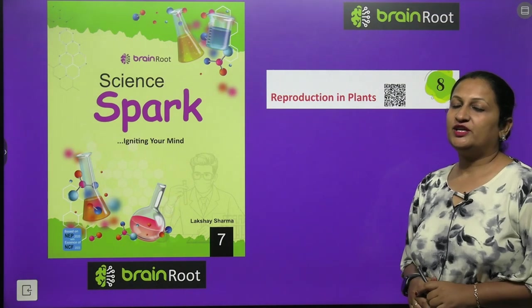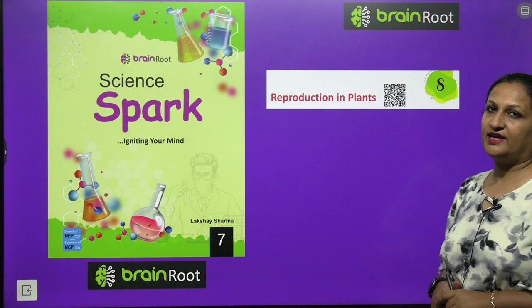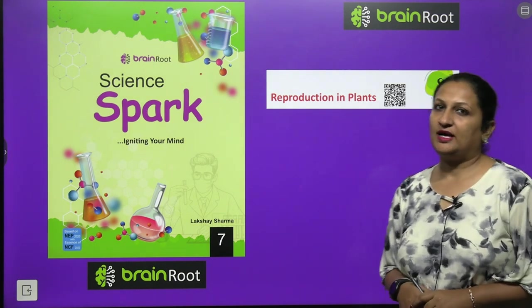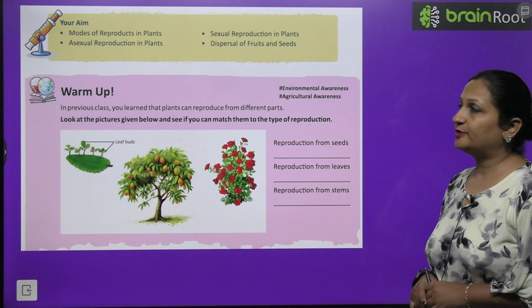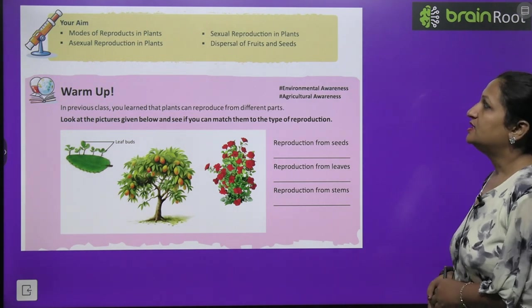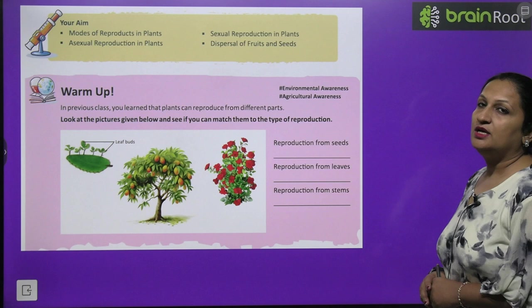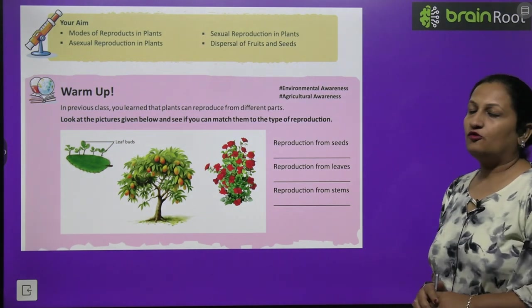Hello my dear children, today we are going to start with class 7 science chapter number 8, reproduction in plants. The main aim of this chapter will be modes of reproduction in plants, asexual reproduction in plants, sexual reproduction in plants, and dispersal of fruits and seeds.